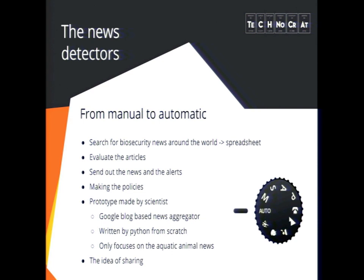Another example: if they find out a country has a foot-and-mouth disease outbreak, they will decide not to import any related product from that country. If they find any other countries importing released animal products from those countries, they'll stop those imports too. The Department of Agriculture realized they have to find information in time. They had a dedicated team of news detectors who would Google biosecurity news around the world daily, put all the URLs into a spreadsheet, visit each URL, and if an article was important, pass it to the right branch. That was a really painful process.